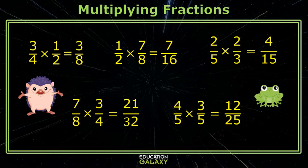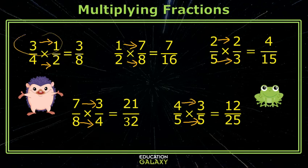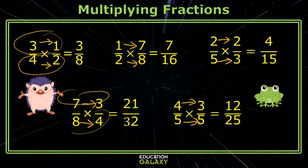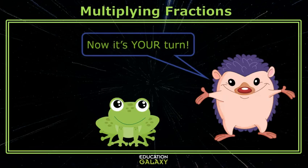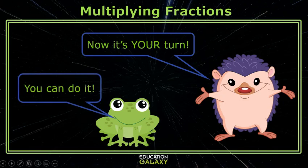Okay, Freddie, do you see a pattern of how we get our numerators and denominators in our answer? I do! I do! We multiply the numerators together and we multiply the denominators together. It works every time! That's right, Freddie! Woo-hoo! Okay, kids, it's your turn. You can do it!